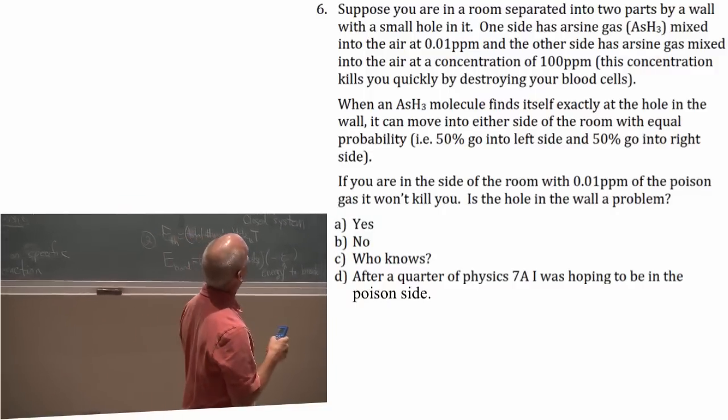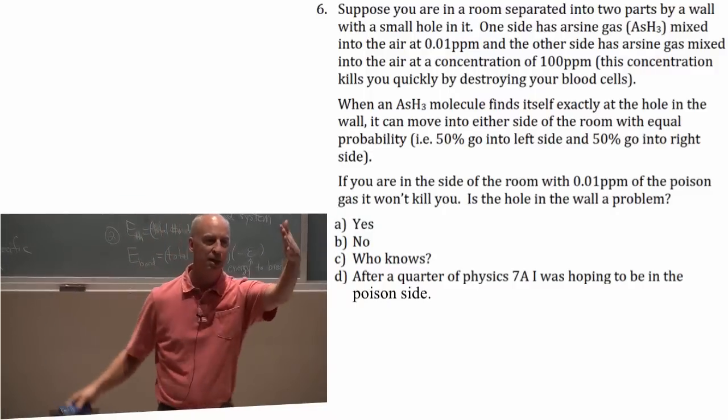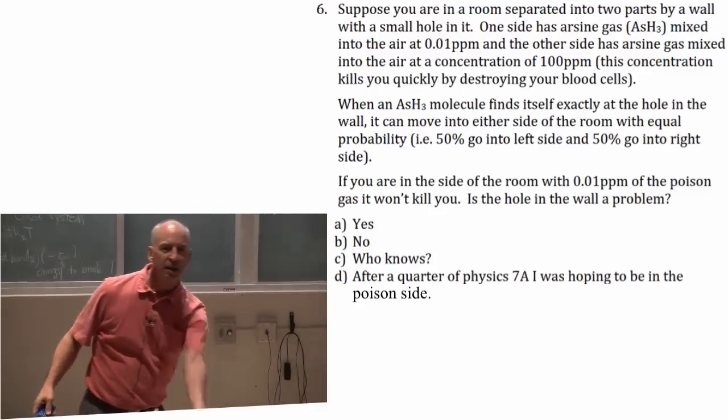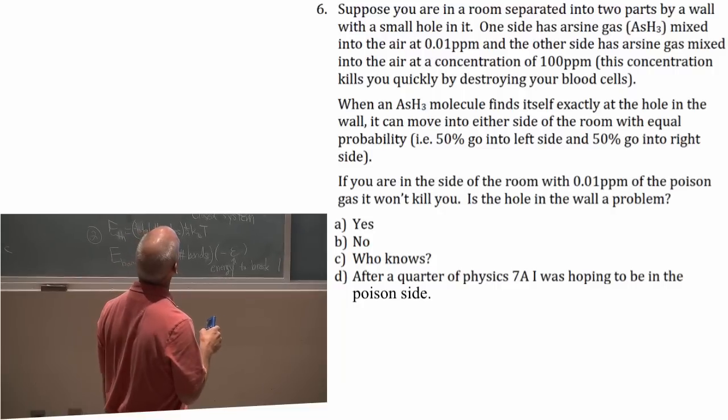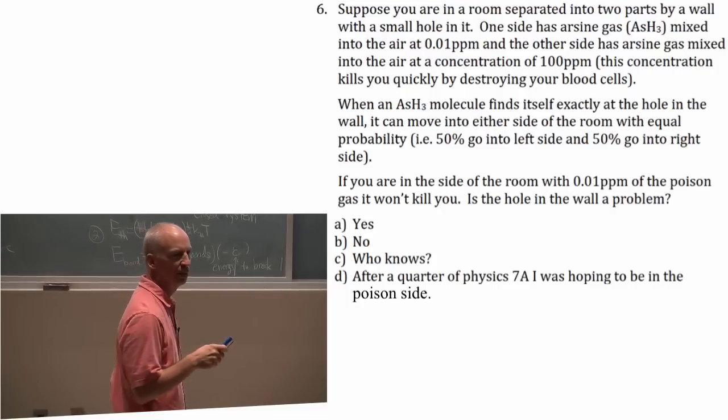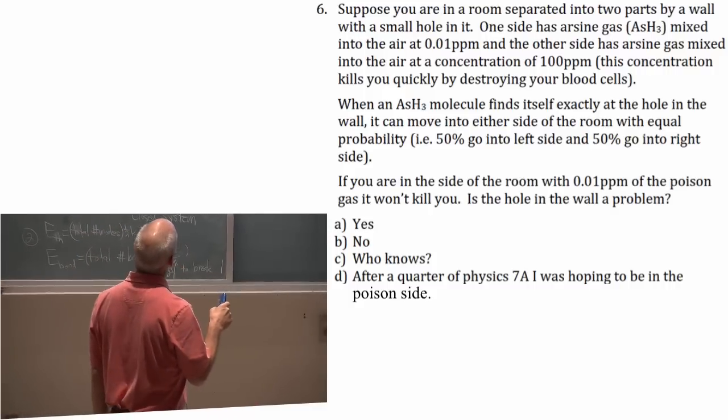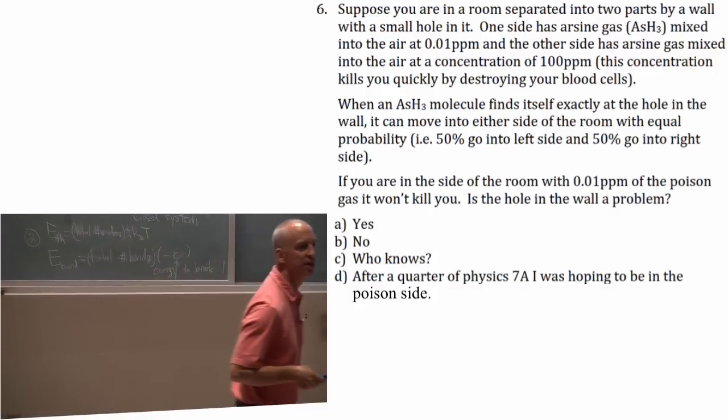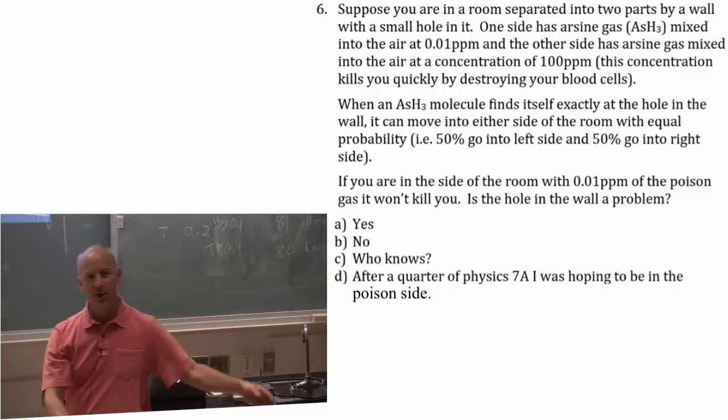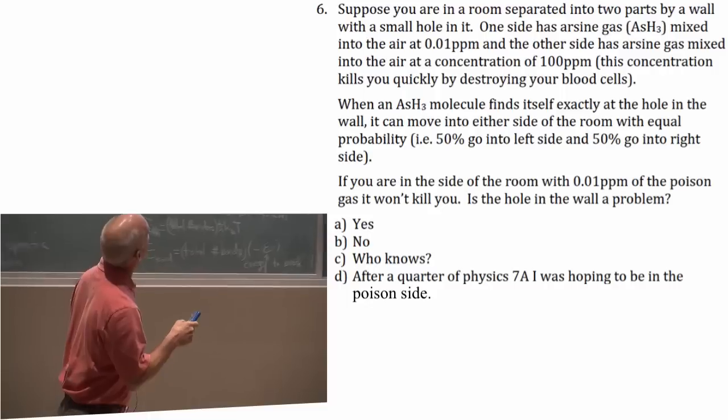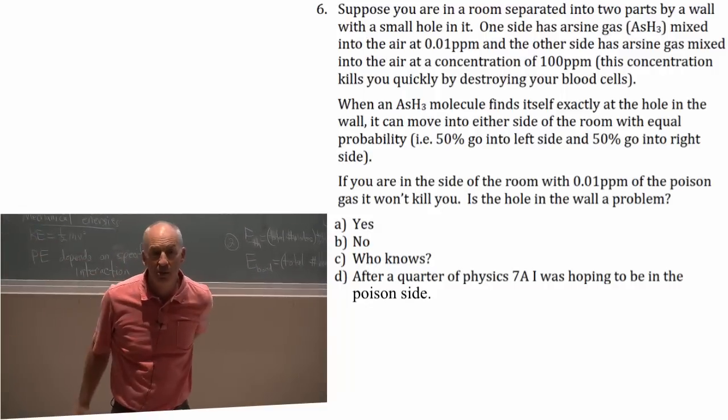Suppose you're in a room separated into two parts by a wall. There's a wall in the center here, with a tiny little hole in it. One side has arsene gas, horrible poison gas, arsenic hydride, at .01 parts per million, so pretty low concentration arsene gas here. Most of you here are not in too bad a shape. On the other side, arsene gas at 100 parts per million, so 10,000 times more.